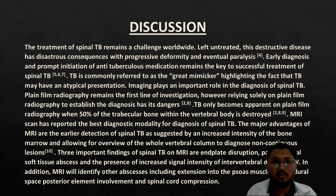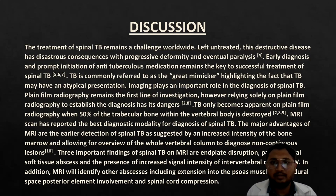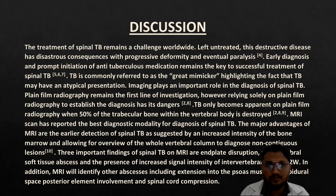As we know, the treatment of spinal tuberculosis remains a challenge worldwide. Left untreated, this destructive disease has disastrous consequences with progressive deformity and eventual paralysis. Early diagnosis and prompt initiation of anti-tuberculous medication remains the key to successful treatment. Imaging plays an important role in diagnosis. Plain radiography remains the first-line investigation; however, relying only on plain film radiography to establish the diagnosis is dangerous. The major advantage of MRI is earlier detection of spinal tuberculosis, as indicated by increased density of bone marrow, and allowing an overview of the whole vertebral column to diagnose non-contiguous lesions.